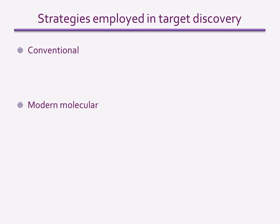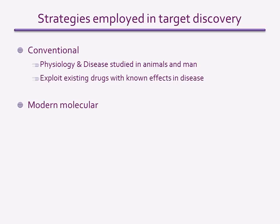There are two main approaches to identifying drug targets: conventional target discovery and the modern molecular approach. The conventional approach was the only option before the human genome was sequenced, but it remains productive today. It involves studying physiological and pathological pathways in human tissues and animal models, and usually includes exploiting existing drugs with known effects in disease, with the aim of understanding how the drugs work. For example, aspirin was used to treat pain long before we understood how it worked. By studying its actions, the target was identified as cyclooxygenase, and that led to the development of a series of new cyclooxygenase inhibitors.